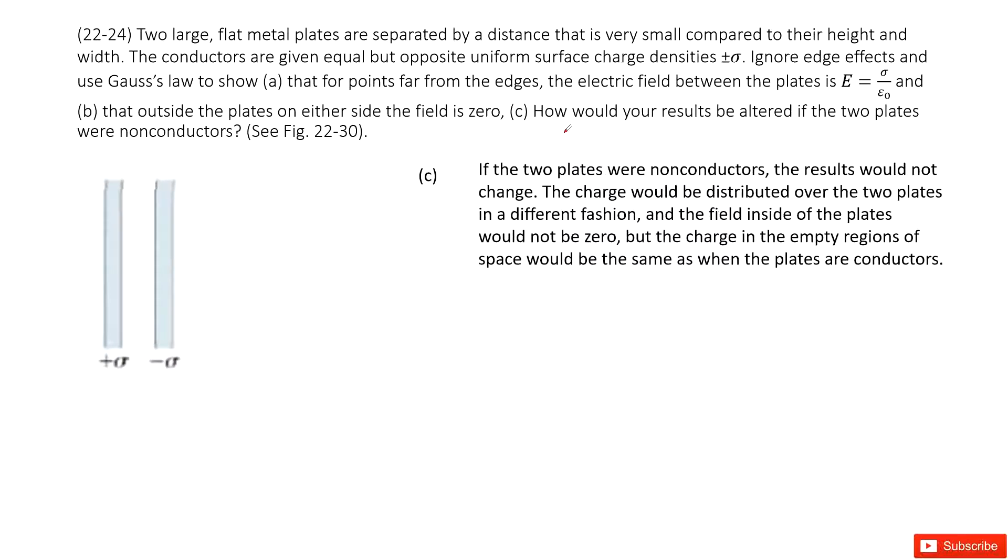The third one asks you how would your results be changed if the two plates are non-conductors? For non-conductors, it just says the charge is located uniformly distributed on these two plates. So that means there is electric field density inside these planes. But if we draw the Gaussian surface for the inner part, for the outer part, will anything change? No. So if the two plates are non-conductors, the result would not change.